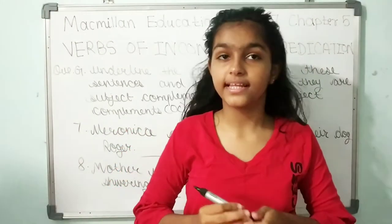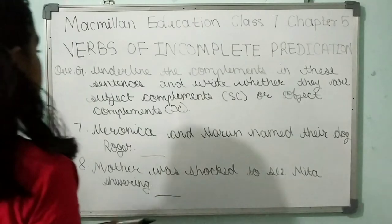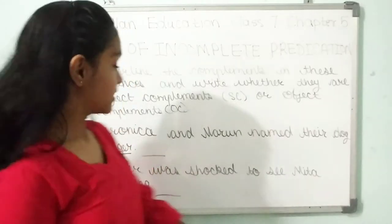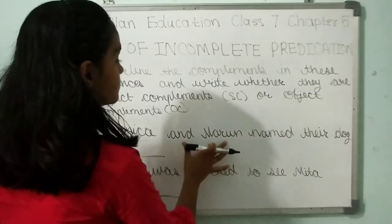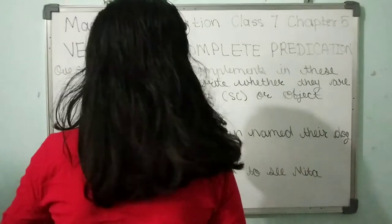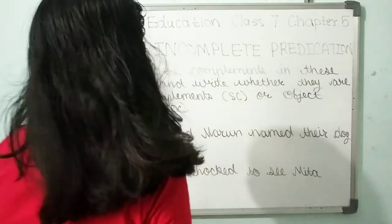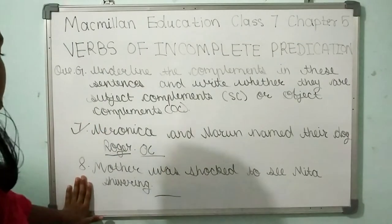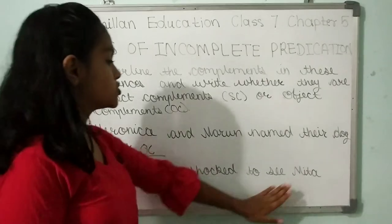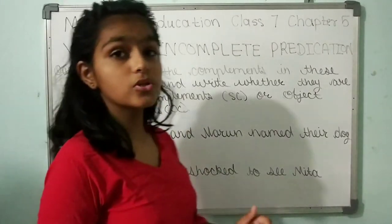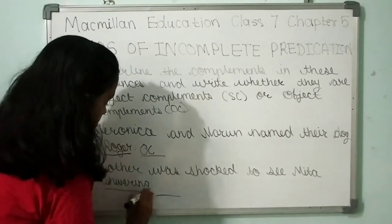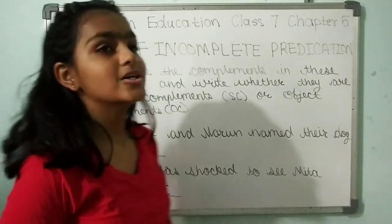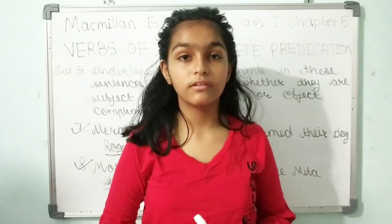Moving on to questions seven and eight. Question seven: Don't get confused — 'Roger' is the complement. Since the sentence involves naming the dog Roger, it will be an object complement (OC). Question eight: 'Mother was shocked to see Meeta shivering.' Here, 'shivering' is the complement and it is an object complement (OC).